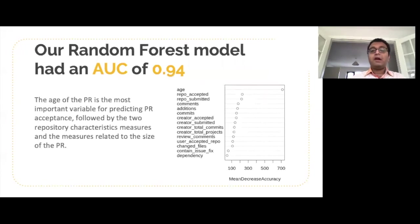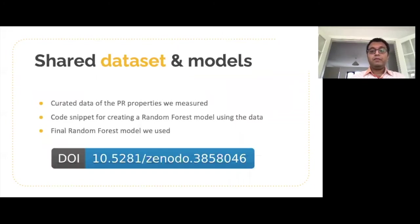Overall, our random forest model with the 15 significant measures had an AUC of 0.94. In terms of the relative importance of the variables, as you can see from this figure, age is the most important variable, followed by the characteristics of the repo and the size of the pull request. We also share our curated dataset, the code snippets, and our final model through Zenodo.